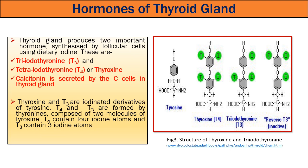T4 and T3 are iodinated derivatives of tyrosine. In the figure given, you can see the structure of tyrosine, T3, T4, and reverse T3. T3 contains 2 tyrosine molecules and 3 iodine atoms, whereas T4 contains 2 tyrosine residues and 4 iodine atoms. The reverse T3, or RT3, is a metabolically inactive form of thyroid hormone, which is generated from coupling of DIT with MIT. We will be discussing DIT and MIT in our later slides.